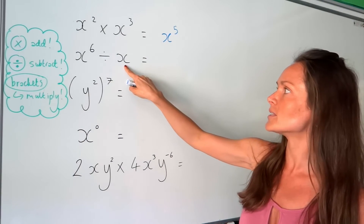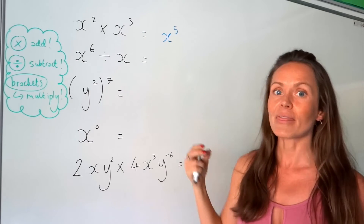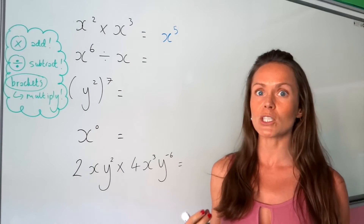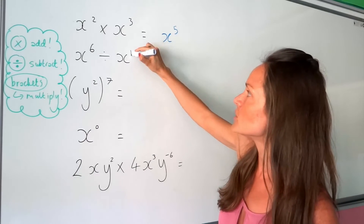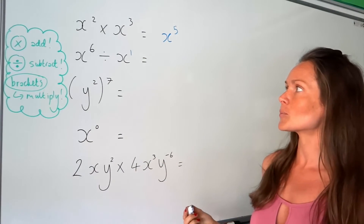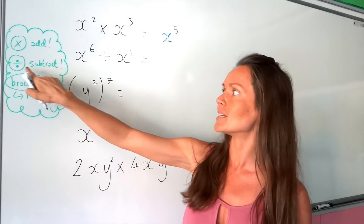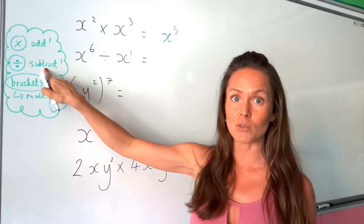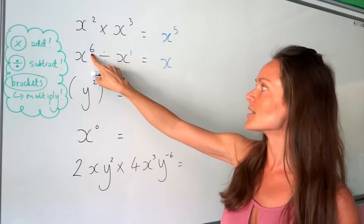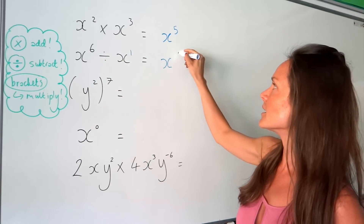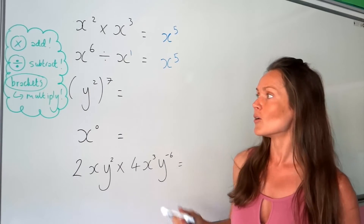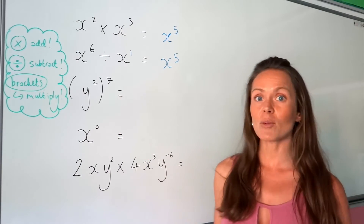Before I do this next one, I want to point out that this x here doesn't have a power on it — there's an invisible one that we don't normally write. Now we can subtract because when we're dividing you subtract the powers. So I write my x value down and six take away one is five.